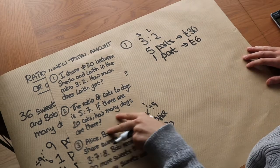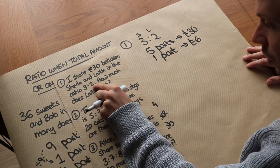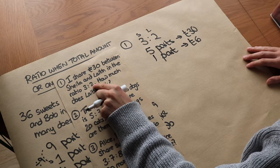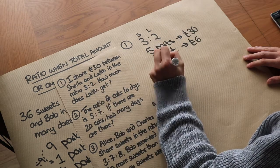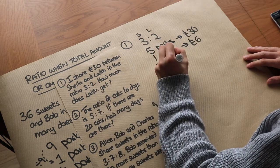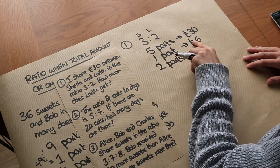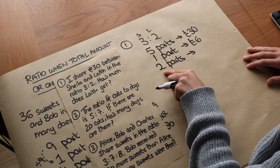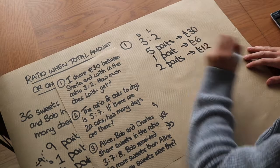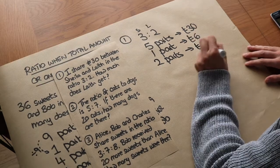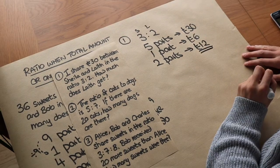We want to work out how much Leif got. Leif got the 2 parts in the ratio, so we work out what 2 parts is worth. If 1 part is 6 pounds, then 2 parts would be twice as much, which is 12 pounds. So that is the final answer — that's what Leif got.